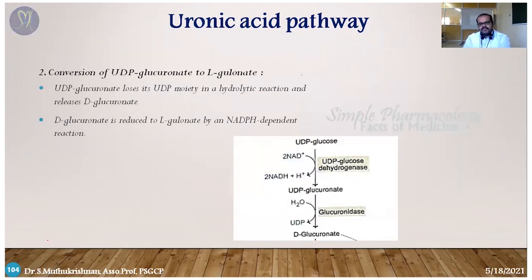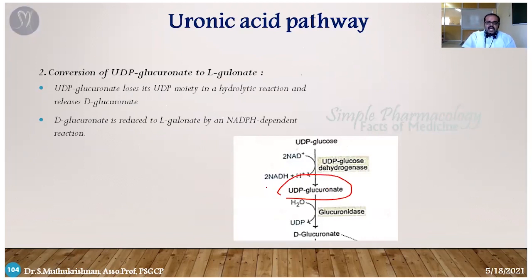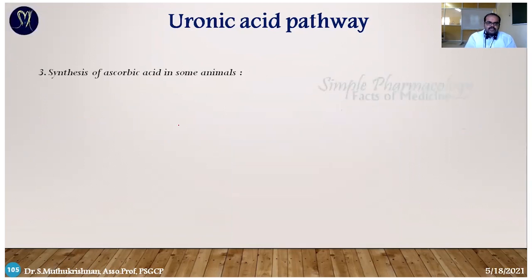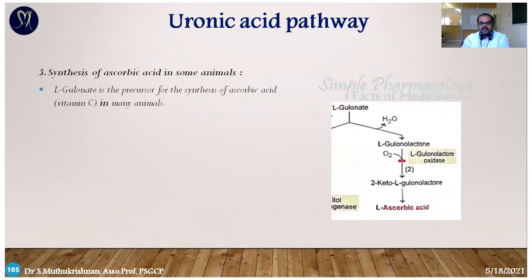In Step 2, conversion of UDP glucuronate into L-gulonate: it is a hydrolytic reaction — with addition of water, the UDP is removed by glucuronidase enzyme, converting the substrate into D-glucuronate. This D-glucuronate is then reduced into L-gulonate by an NADPH-dependent reaction.